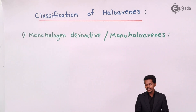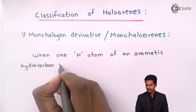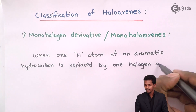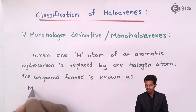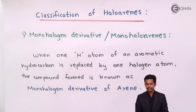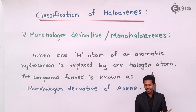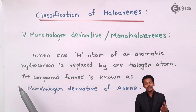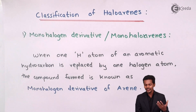What is the definition of monohaloarenes? When one hydrogen atom of an aromatic hydrocarbon is replaced by one halogen atom — that would be chlorine, bromine, or iodine — the compound formed is known as a monohalogen derivative of arenes. Examples include chlorobenzene and bromobenzene; these are all examples of monohalogen derivatives of arenes, also known as monohaloarenes.